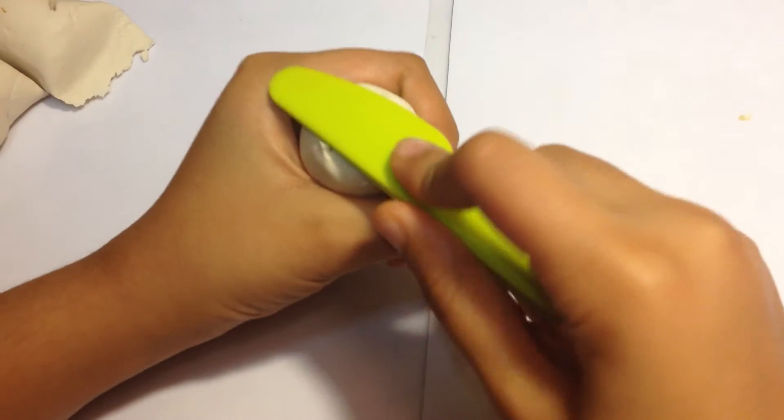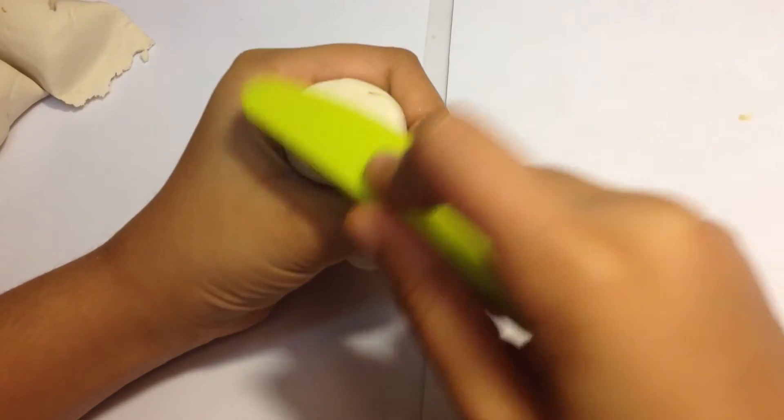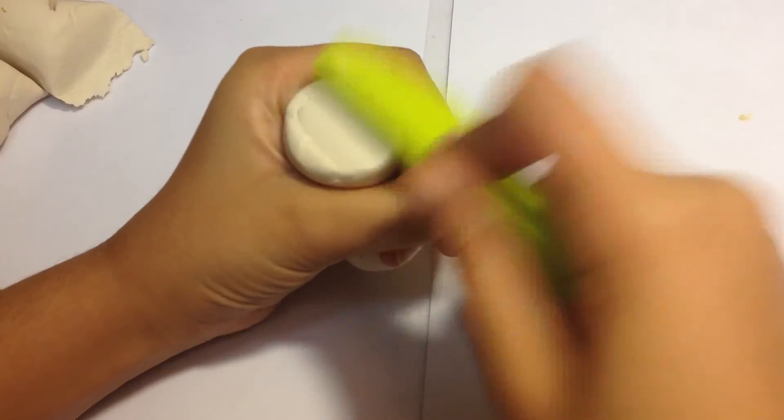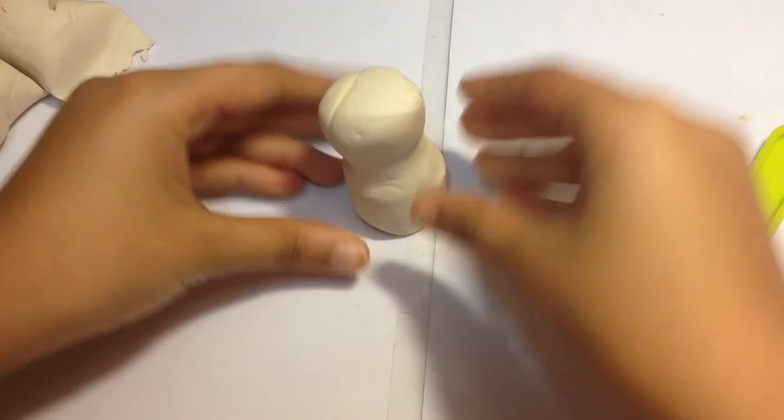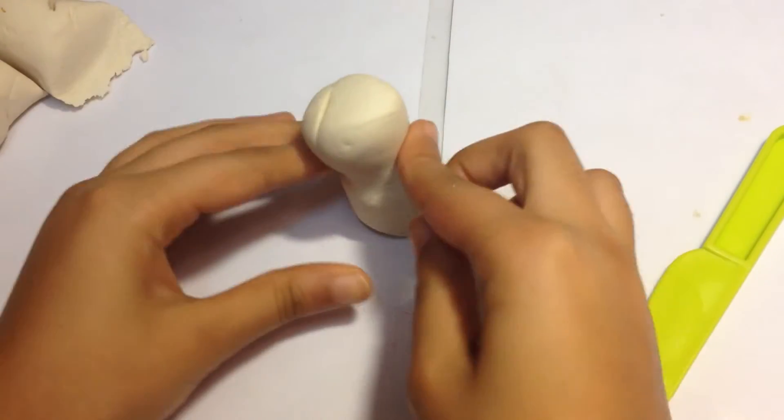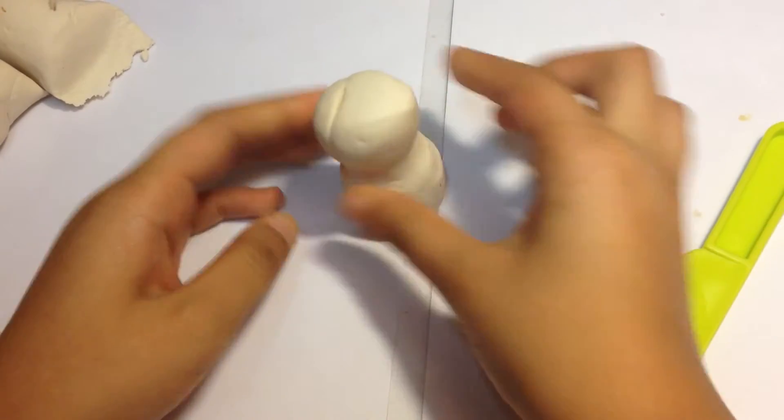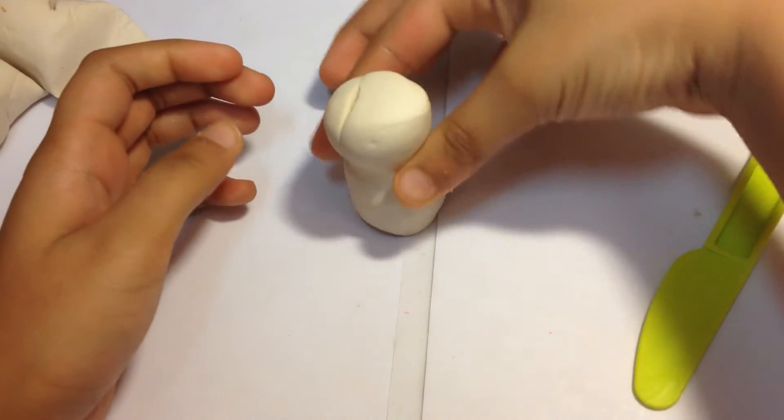That looks pretty good. You can take your knife and just flatten the bottom so it can stand up properly. You can also just shape it a little with your two index fingers like this.